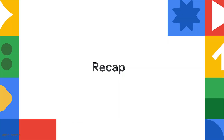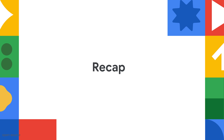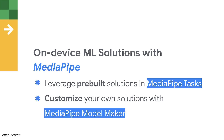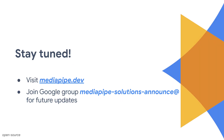That was all the content for today. Let's recap: I introduced how to create on-device ML solutions with MediaPipe. To get started, explore our pre-built solutions in MediaPipe Tasks and deploy them in a few lines of code. If pre-built solutions don't meet your specific needs, customize your own solutions with MediaPipe ModelMaker and deploy the trained model using MediaPipe Tasks. Follow us on MediaPipe.dev or join MediaPipe-Solutions-Announce for the latest updates. Stay tuned.